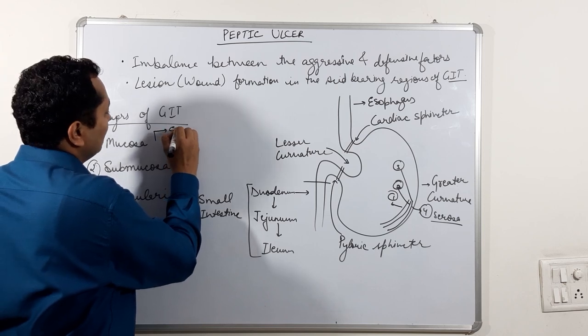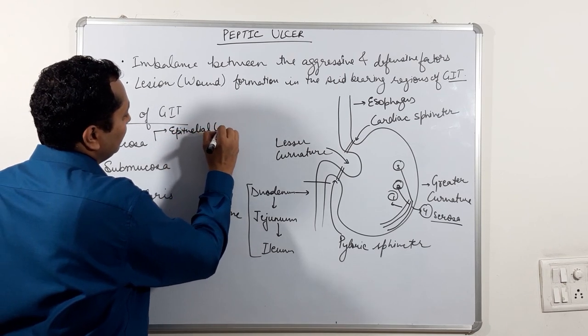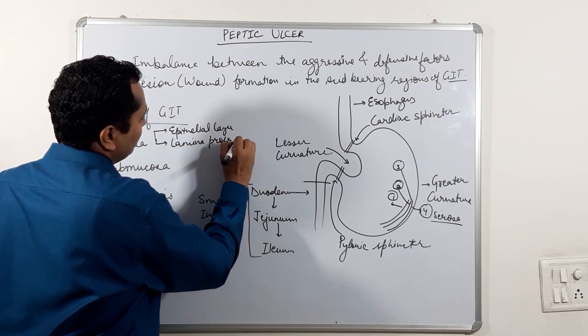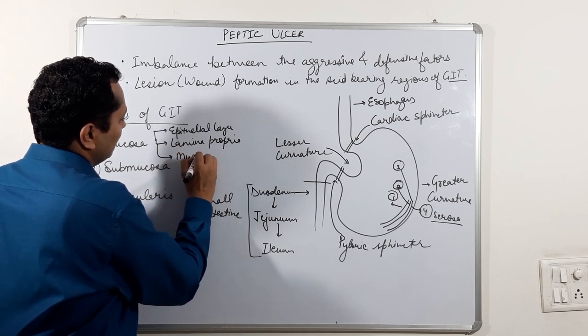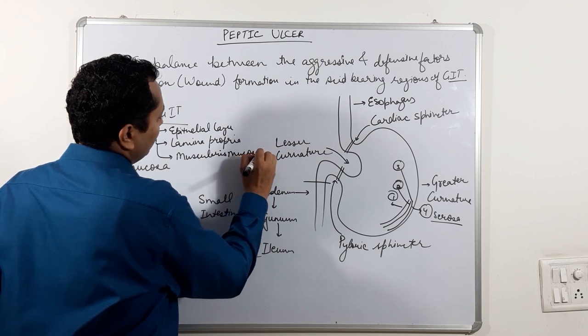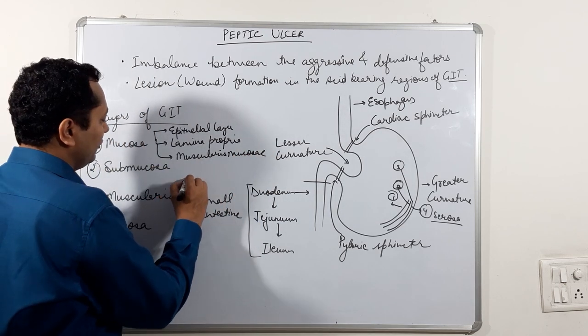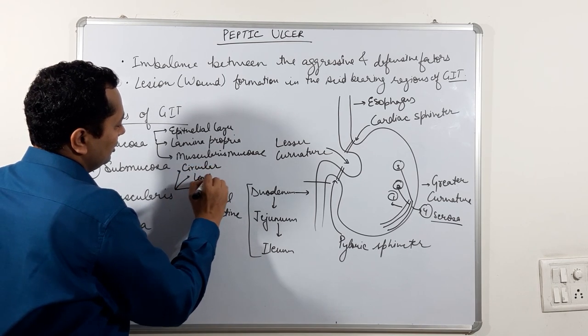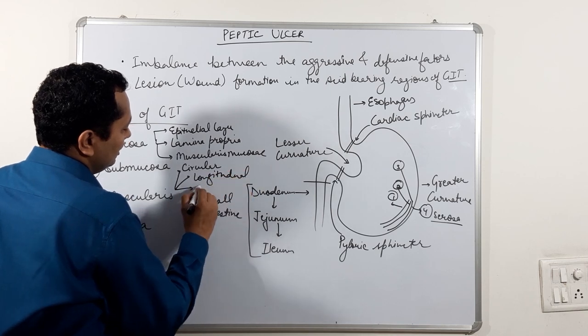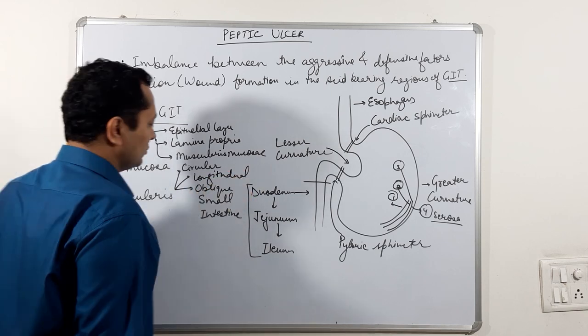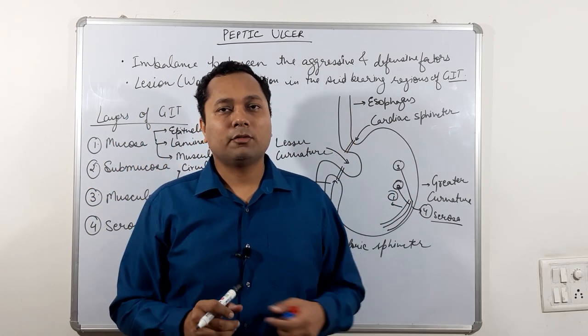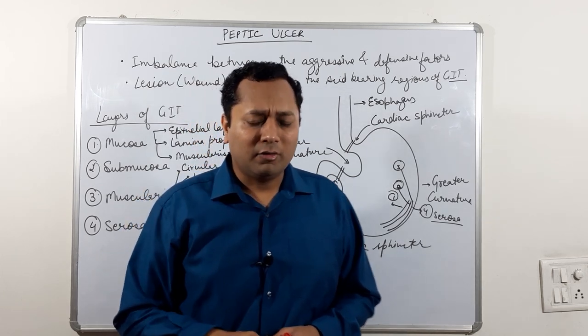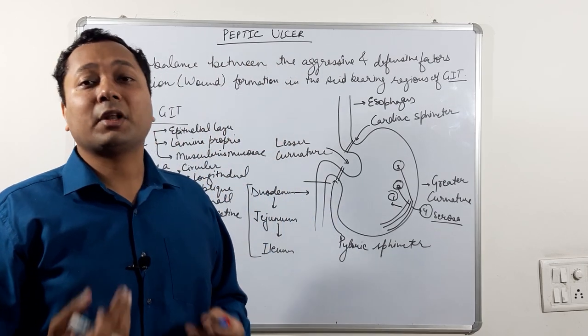There are several other layers that mucosa has. Mucosa has epithelial layer, then it has lamina propria, then it has muscularis mucosa. And in this muscularis, we have circular, longitudinal and oblique layers. All these layers help in the churning of the food in the stomach. The layers of the mucosa and submucosa have function in the secretion and protection in the stomach.